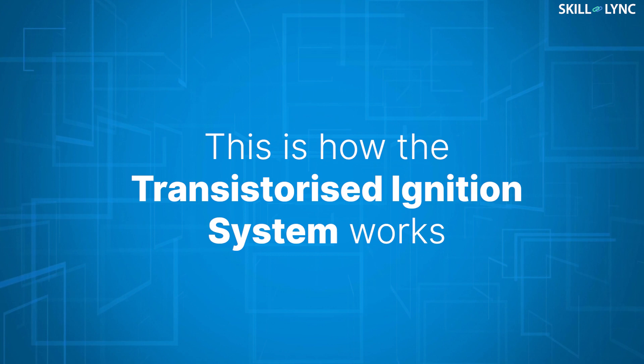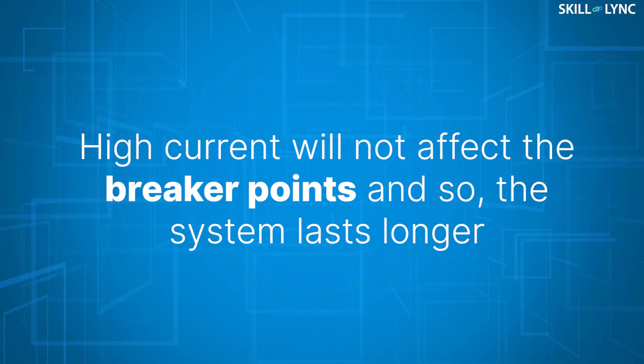This is how the transistorized ignition system works. As the contact breaker is not directly connected with the coil, a high current in the circuit will not affect it. Thus, the system lasts longer.